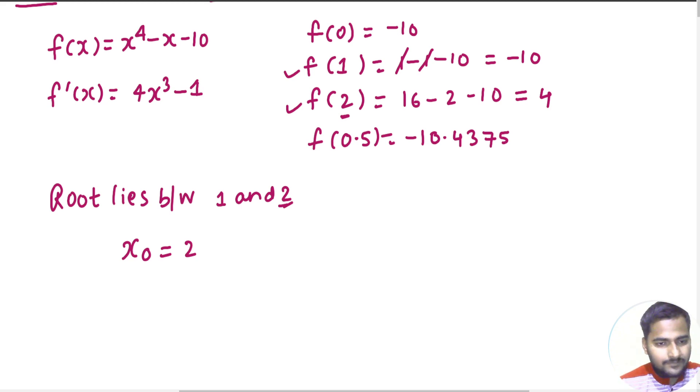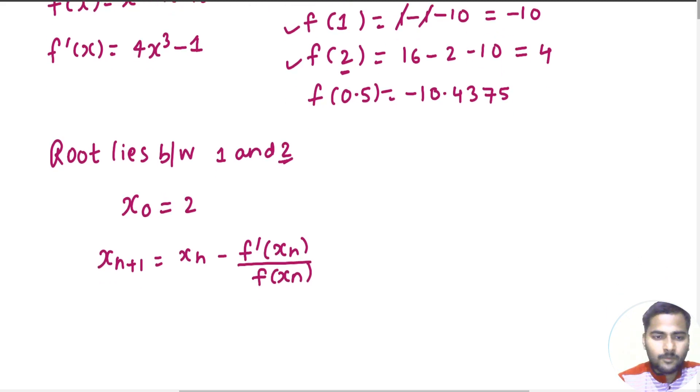Now we have the iterative formula for Newton-Raphson method, that is xn plus 1 equal to xn minus f of xn divided by f dash xn. This is the iterative formula, which is xn plus 1 is xn minus f of xn divided by f dash xn.